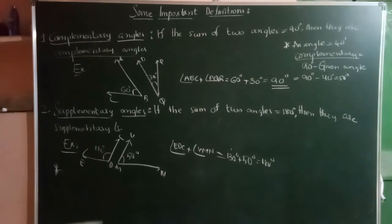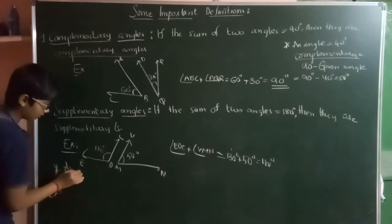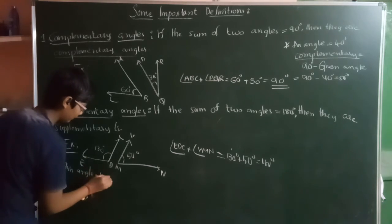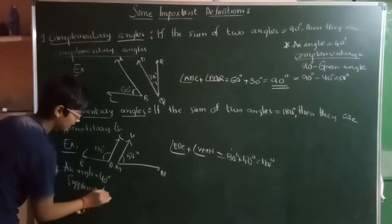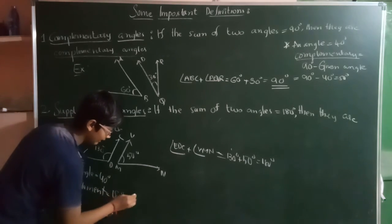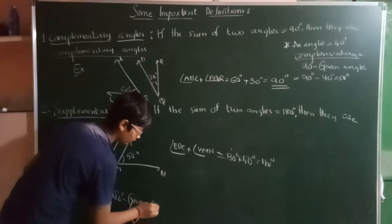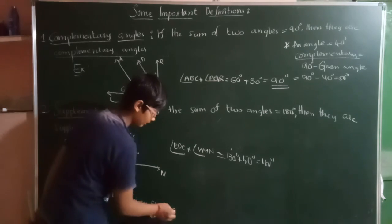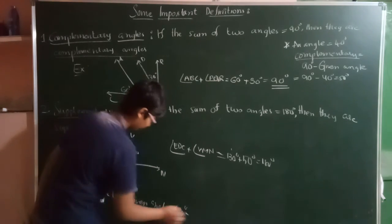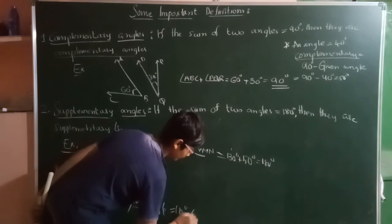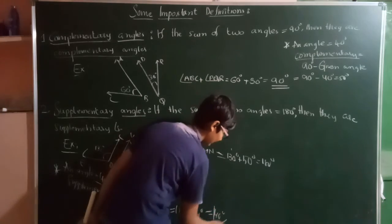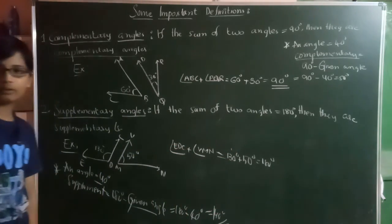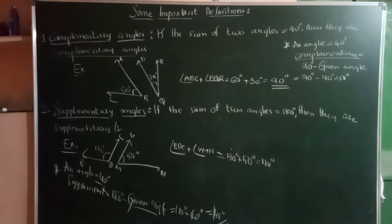Now let's see supplementary angles. Suppose an angle is 40 degrees. The supplementary angle is always 180 degrees minus the given angle. So, 180 degrees minus 40 degrees gives us 140 degrees. Using these formulas — 90 minus the given angle for complementary, and 180 minus the given angle for supplementary — we can find the complementary and supplementary angles.